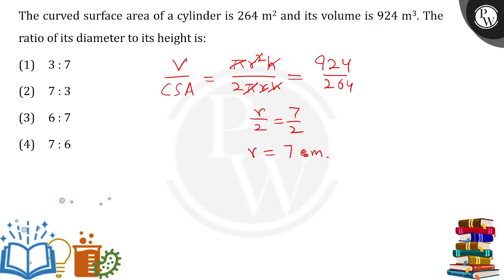Once we have the value of the radius, from here I can find out the CSA. CSA will be 2πrh. Put up the values: 2 into 22 by 7 into 7 into h.